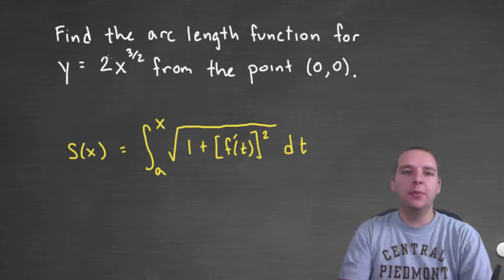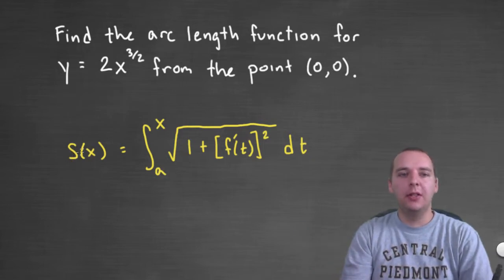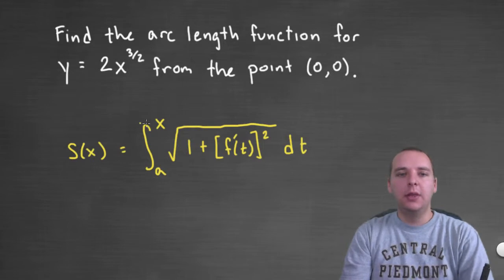So this is going to be kind of like finding the arc length but not from a beginning point to a fixed ending point but a beginning point to what you might think of as a floating ending point. And so we have s of x, the arc length ending at x, would be the integral from a to x of the square root of 1 plus f prime of t squared dt.